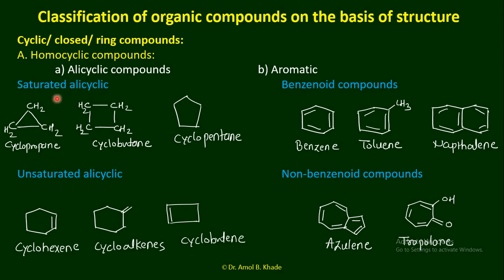Alicyclic compounds divide into saturated and unsaturated. The other type of classification of homocyclic compounds is aromatic. Aromatic, as the name indicates — aroma means a good smell. These are organic compounds with a very peculiar and characteristic smell. For example, benzene and toluene have a very characteristic odor. These aromatic compounds can be classified into two subtypes: benzenoid and non-benzenoid.